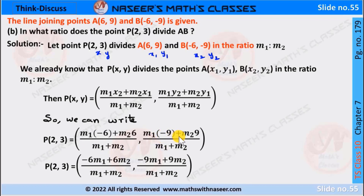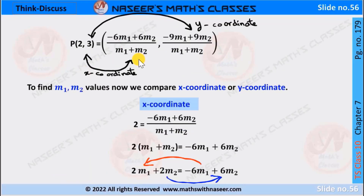comma (M1·(−9) + M2·9) / (M1 + M2). M1 into −6 is −6M1, M2 into 6 is 6M2, M1 into −9 is −9M1, M2 into 9 is 9M2. To find M1 and M2 values, we have to compare X coordinates or Y coordinates. Now we compare the X coordinates, then we can write 2 = (−6M1 + 6M2) / (M1 + M2).